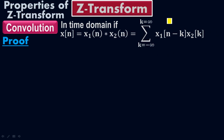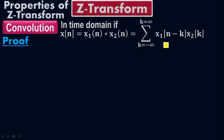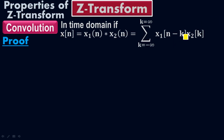If you forgot what the time-shifting property is, just go back and check it. According to the time-shifting property, we have shifted N by K. For X2(N), I am going to plug in X2(K), because for N I have K, where K equals negative infinity to positive infinity — the two-sided equation. So X(N) equals the summation of X1(N minus K) times X2(K).